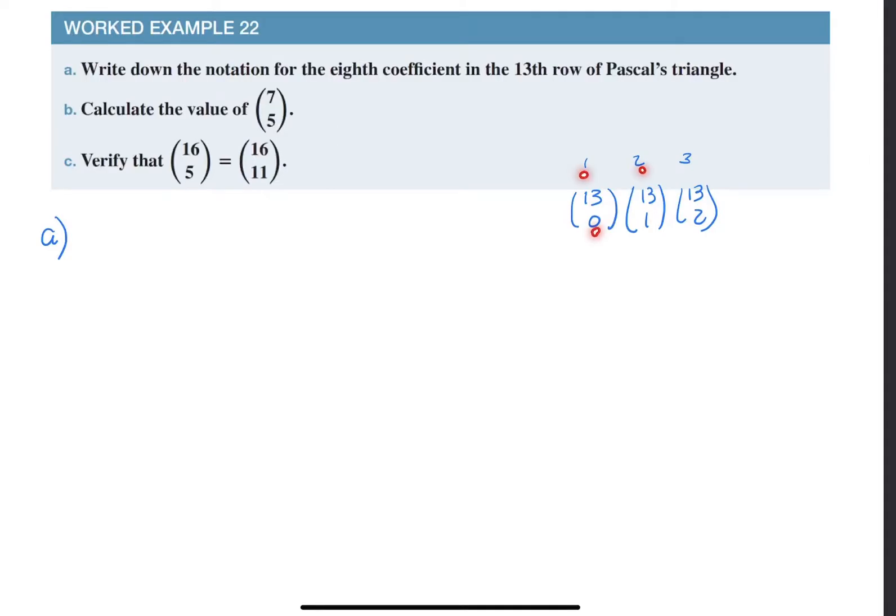So the first coefficient is zero. Second is one. Third is two. Which means that the eighth coefficient of thirteen means that that r value, so n will be thirteen, that will be the thirteenth row. But r will be, the eighth coefficient will be seven, due to what I've just showed you here.